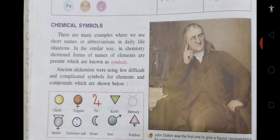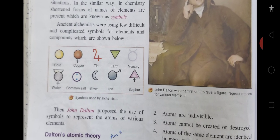The ancient alchemists were using difficult and complicated symbols for elements and compounds. In ancient times these different symbols were used to represent various elements or compounds — for example, for gold a yellow circle was used. But they were difficult to remember and as the number of elements increased they were even more difficult to name. Then John Dalton proposed the use of symbols to represent the atom of various elements, suggesting that each element should be given a short form, which is the symbol.